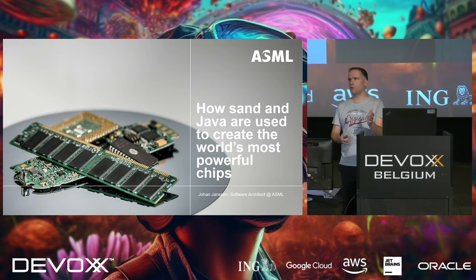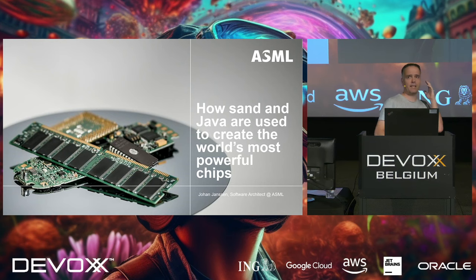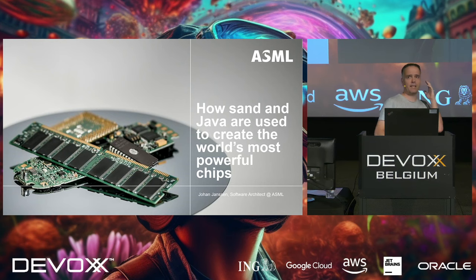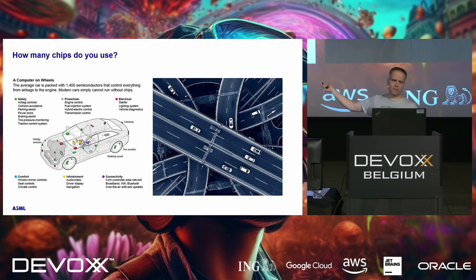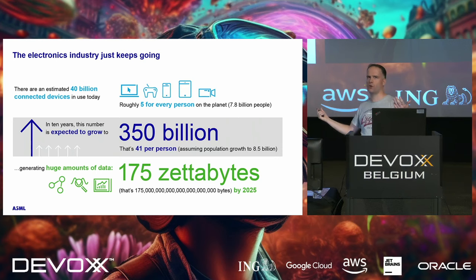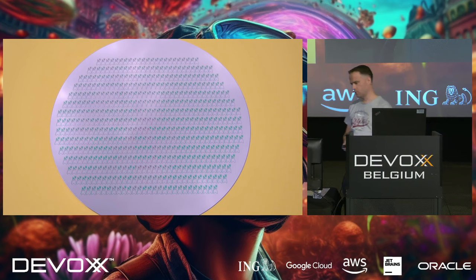We'll start with how chips are created, then look at how we can make better chips, and then see how software is involved in that process. If you have any questions in between, feel free to interrupt me. Nowadays a lot of chips are used. They estimate everyone has about five connected devices. In a couple of years, they estimate it will be 41. A lot of data is going around, so chips are really important.